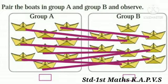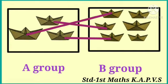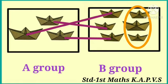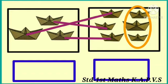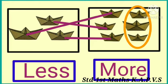Look at another pair of objects. Let us pair the boards in group A and group B by joining one board in group A with one board in group B. Some boards in group B remain, which means boards in group B are more and boards in group A are less.